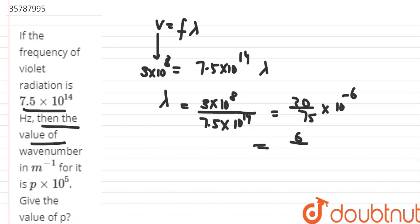This simplifies to 0.4 × 10⁻⁶, which we can write as 4 × 10⁻⁷ meters.